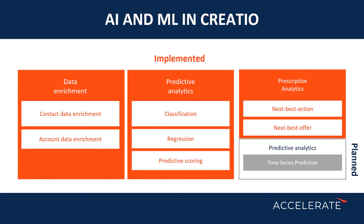We use regression to determine the duration of a particular request. If we know we're getting a request from a customer and it's probably going to take us a little bit longer than the SLA allows, then we know about this delay well before we actually go past it. And predictive scoring allows departments to get a score on how likely or unlikely a particular customer is to transition to the next stage in their sales pipeline, or how likely someone is to react to a particular marketing campaign.